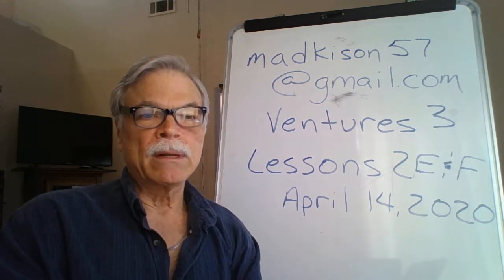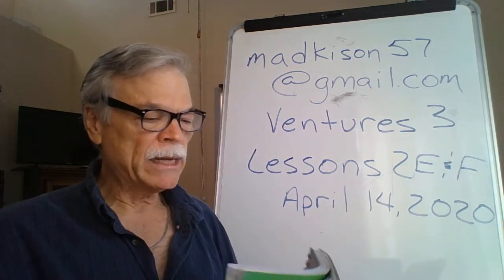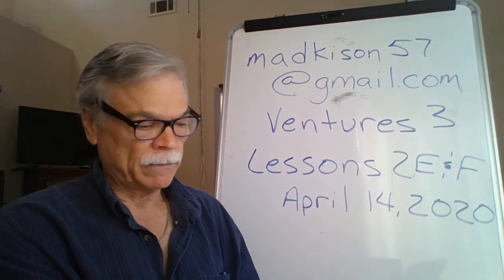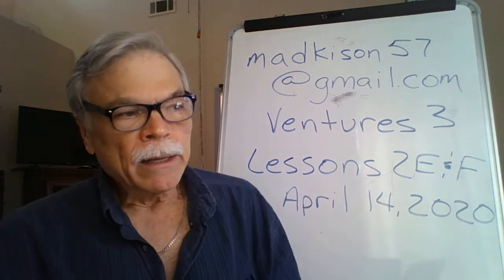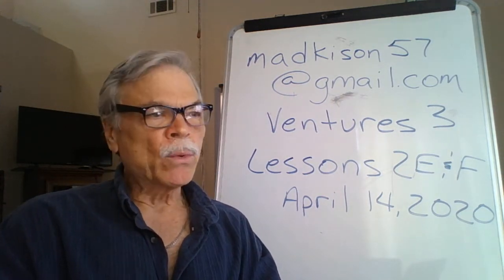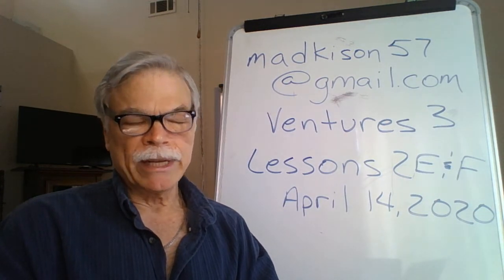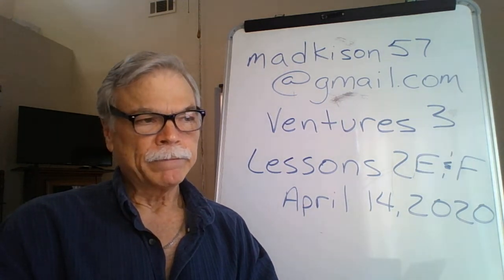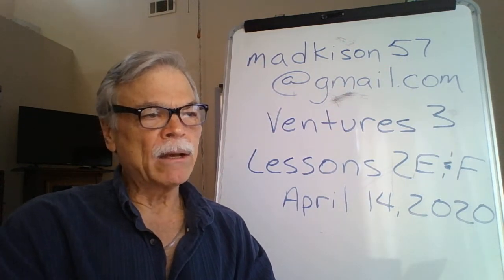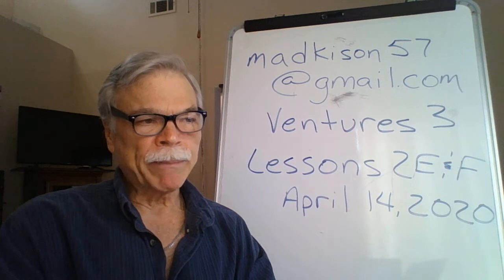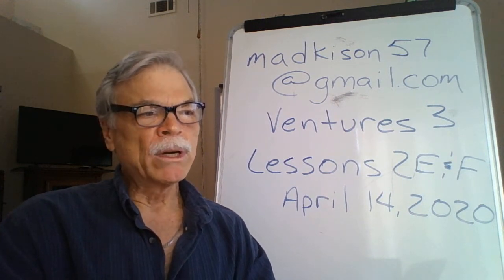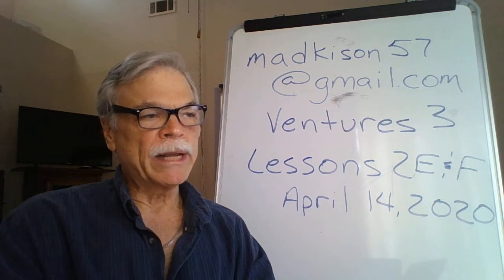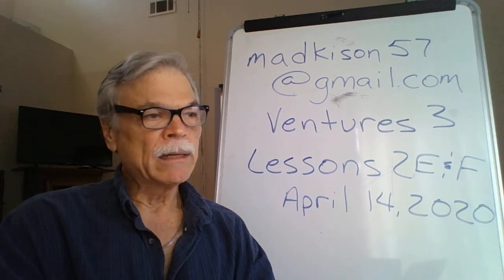Today we're going to start with Lesson 2E. If you want to take a look at your book, Ventures 3, please turn to page 26. Lesson 2E is about writing an explanatory paragraph about strategies for learning English. We're also going to focus on the present perfect verb tense. An explanatory paragraph about strategies for learning English means we're going to describe in a paragraph the different strategies we might think of in order to learn English.